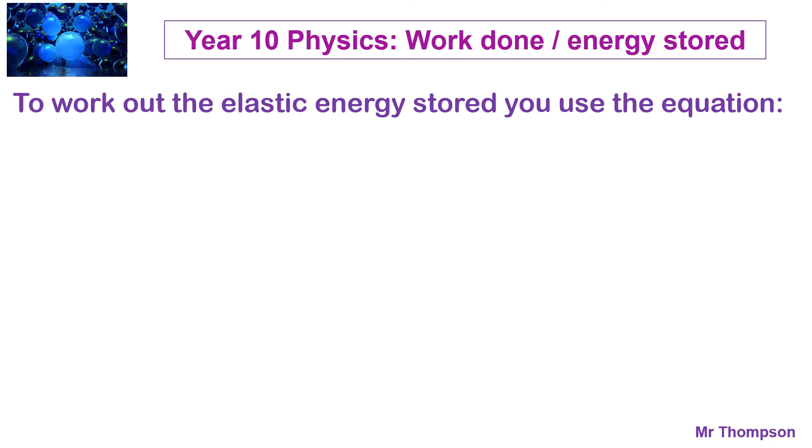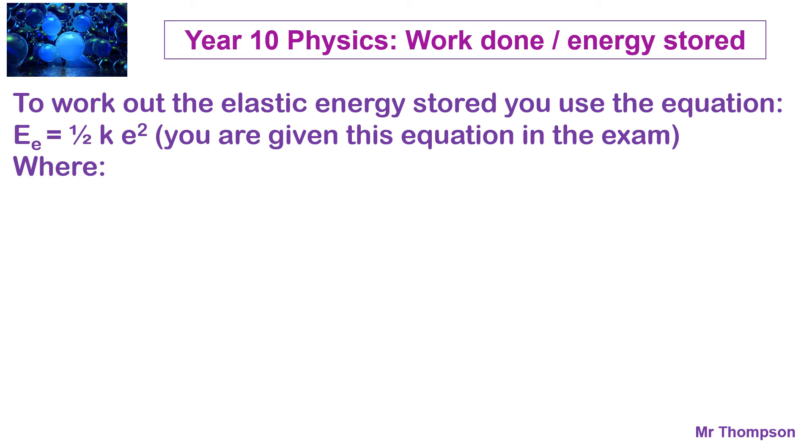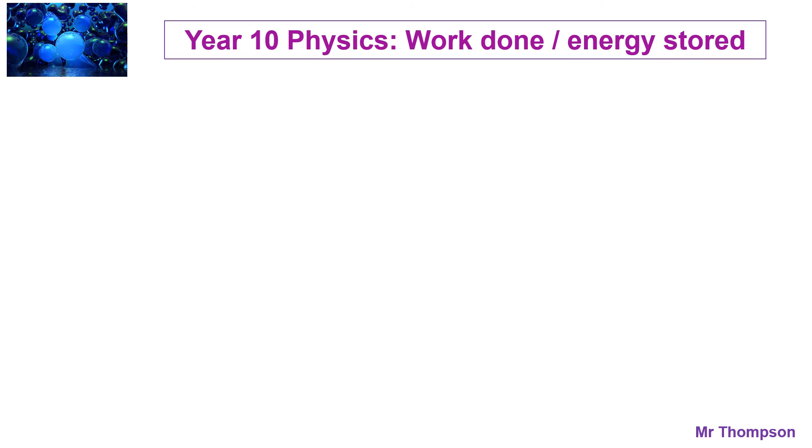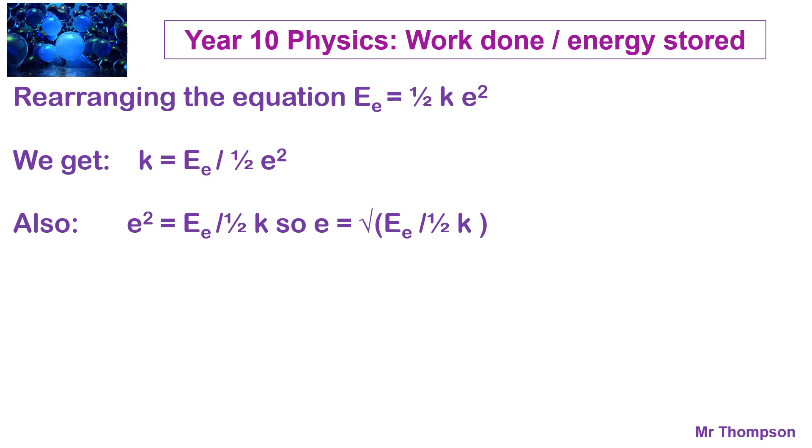So, let's look at how you can work out the elastic energy stored by using the equation. Here's the equation. The symbols mean, the E with a small e means elastic energy. You always use capital E for energy. That's measured in joules. The K is the constant, the spring constant, which is N per meter. And the E is the extension, which you always put into meters. Rearranging it. If you want to do a higher level, you need to be able to rearrange it. Hopefully, you can do that. To get K is equal to E divided by half of extension squared, and also this equation here.